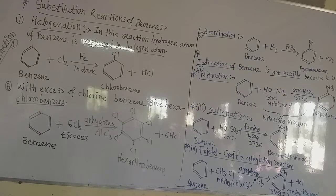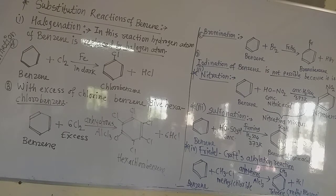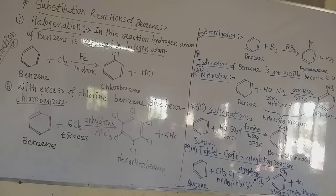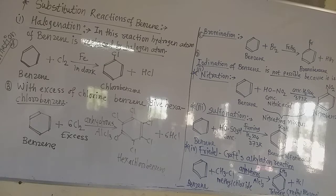Remember that there are two reactions in chlorination. Which reaction they ask you in the examination is important. If they ask what is the action of chlorine in the presence of anhydrous aluminum chloride, then write the second reaction. And if they ask what is the action of chlorine in the dark with Fe catalyst, then write the first reaction. There are two marks for every reaction.